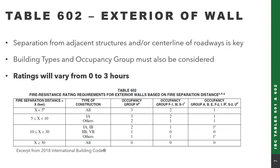In Table 602, the first column is the fire separation distance, broken into four categories: less than 5 feet, 5 to 10, 10 to 30, and greater than or equal to 30 feet. The second column focuses on construction types. If we're less than 5 feet, construction type does not impact the fire rating requirement. Similarly, if we're greater than or equal to 30 feet, it's not going to impact fire rating requirements. However, construction type does matter between 5 and 30 feet.